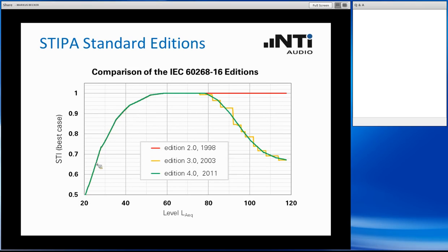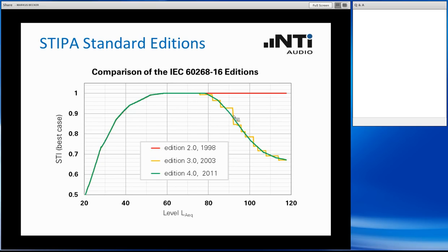A similar thing happens at higher sound pressure levels — here we are not talking about hearing threshold, but about masking effects. Standard version 2.0 did not reflect that, so it was just a straight line saying the louder you replay the STIPA test signal, the better the result, or it would stay at a high level. But in fact, humans would not understand it anymore because it was becoming too loud. Revision 3, the yellow curve, introduced a negative offset also at high sound pressure levels — unfortunately in a stepwise function. If the sound pressure level was jumping around this value, you would get changing STIPA results all the time. For that reason, in the latest standard a smooth curve was introduced, already implemented in the XL2, which now reflects human perception very nicely.